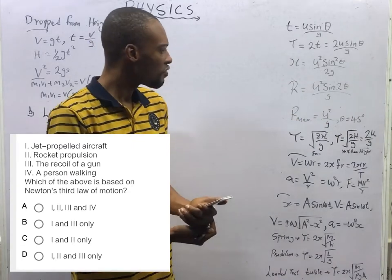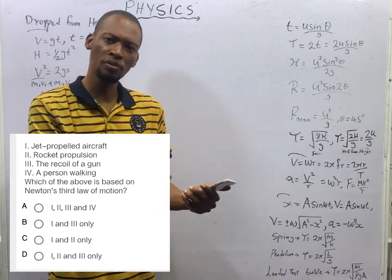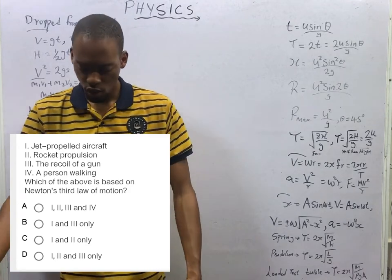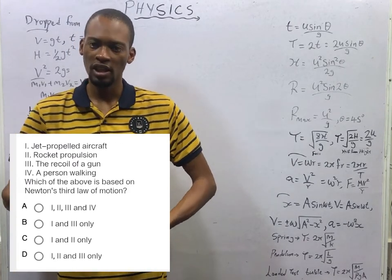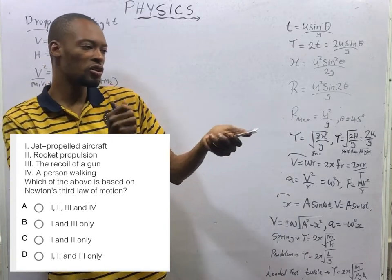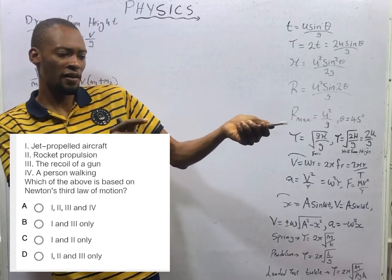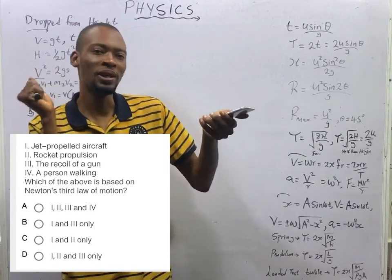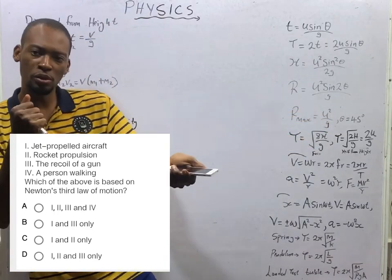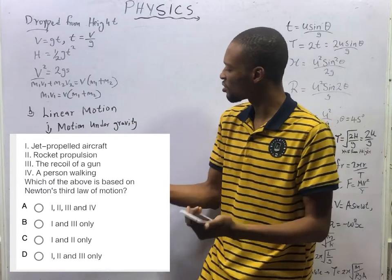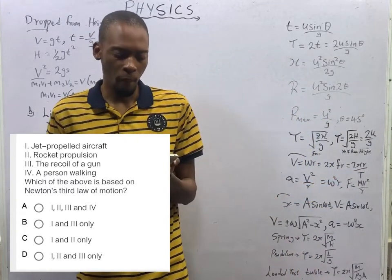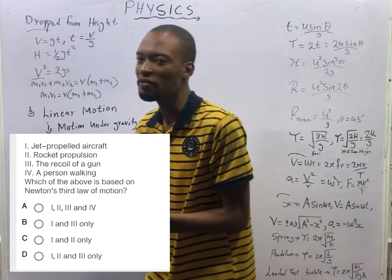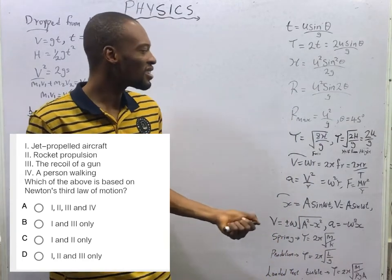Newton's third law states that for every action there is an equal and opposite reaction. For example, as you stand on the ground your weight acts on the ground, and an opposite force balances your weight. When you shoot a gun, the bullet going forward is the action and the recoil pushing you backward is the reaction. Rocket propulsion and jet-propelled aircraft are all applications of Newton's third law.